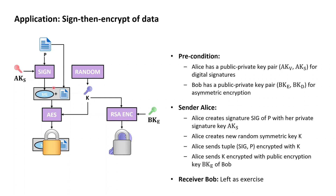Then, in a second step, Alice creates a completely new, randomly sampled symmetric key K. This symmetric key K is then used by Alice to symmetrically encrypt the email and the attached digital signature with AES into a ciphertext. At this point, only Alice knows the symmetric key, so in order to enable Bob to later access this email, Alice needs to make this symmetric key accessible to Bob. She does this by taking Bob's public encryption key from his public-private encryption key pair and asymmetrically encrypting the symmetric key K with RSA, resulting in an encrypted symmetric key K.